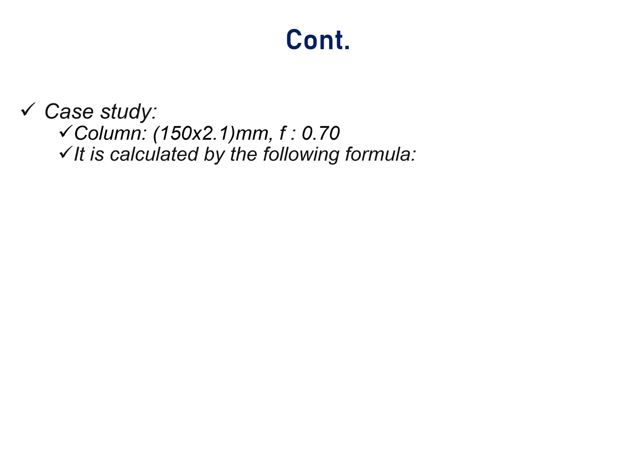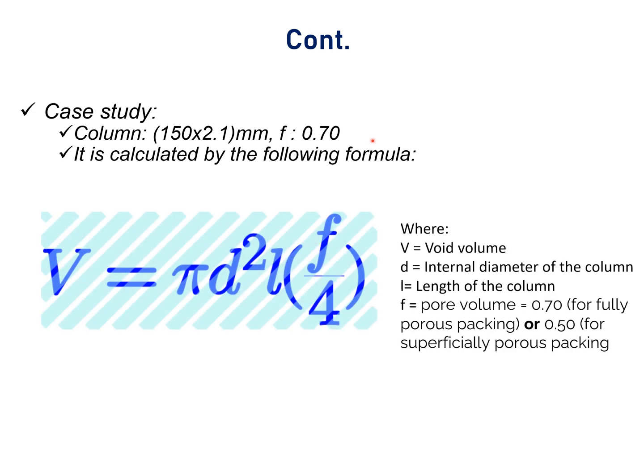Case study. Let us consider a column which length is 150 mm and diameter is 2.1 mm and its pore volume is 0.70. Now, what will be its void volume? Using the above formula as we discussed, V equals pi d squared l times f by 4.